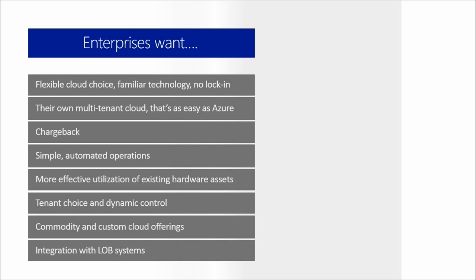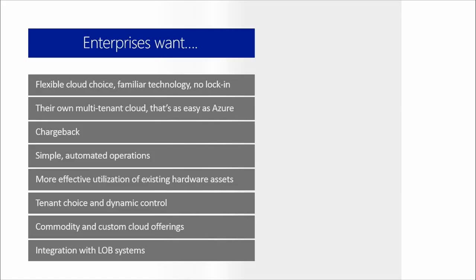Enterprises want a flexible cloud choice, familiar technologies with no vendor lock-in. They want their own multi-tenanted cloud that is easy to use because many enterprises are already dealing with rogue IT — where customers bypass IT and get services from other cloud providers. They want to provide an easy self-service model to rein in that rogue IT. They also want a chargeback model for usage-based charging, simple automated operations, more efficient utilization of existing hardware assets, tenant choice and dynamic control, commodity and custom cloud offerings, and integration with their line of business applications.